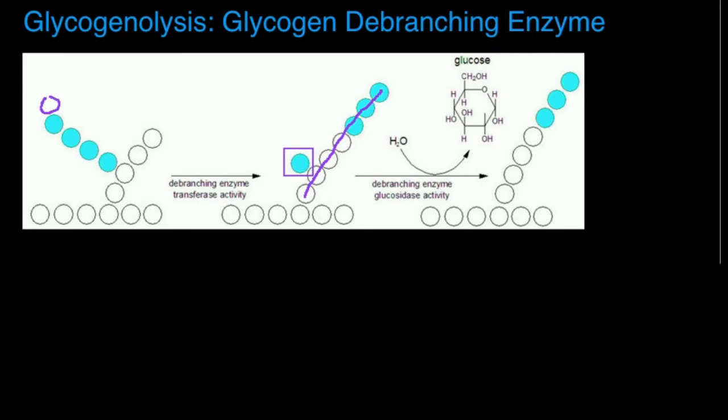Previously, there could have been other glucose units on this branch. These glucose units were removed through glycogen phosphorylase activity as shown there. However, once you get down to a branch that has four glucose units, it turns out glycogen debranching enzyme has a certain activity that's very important.